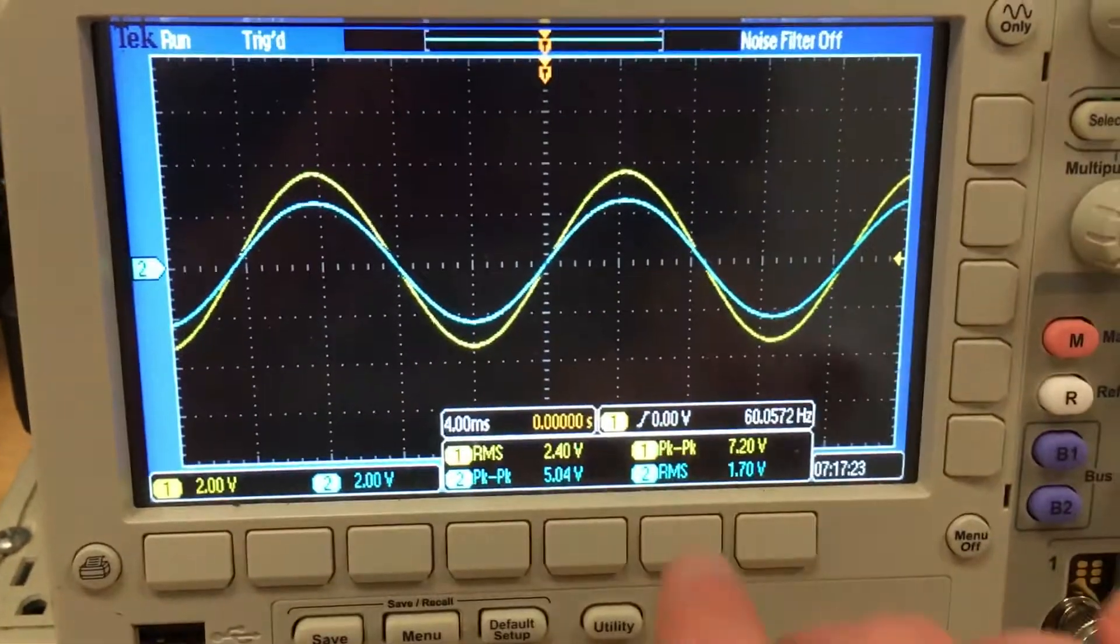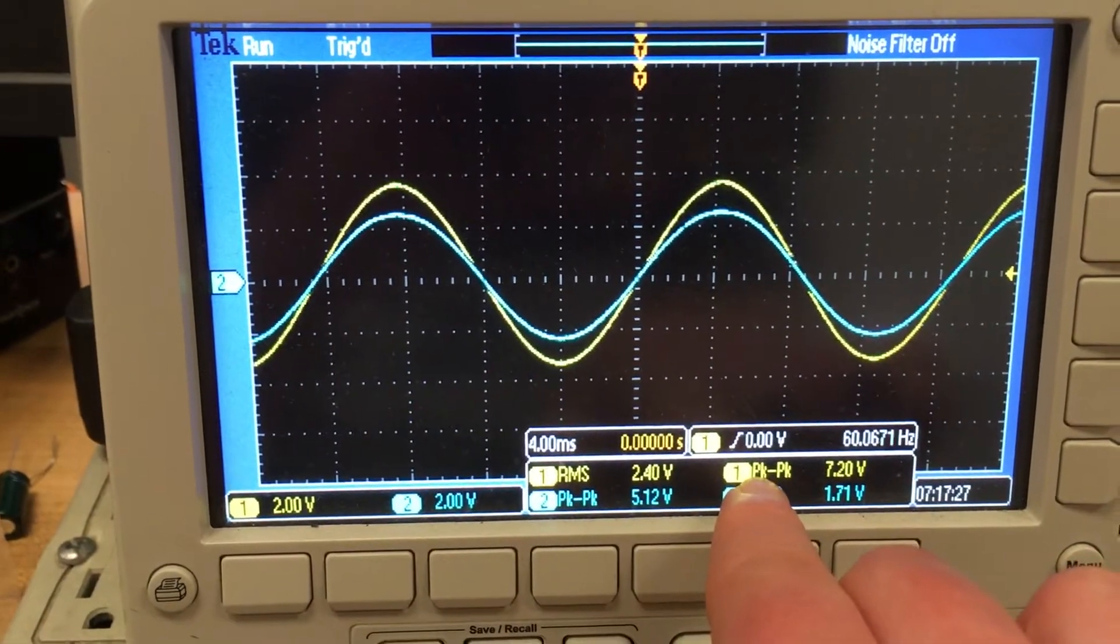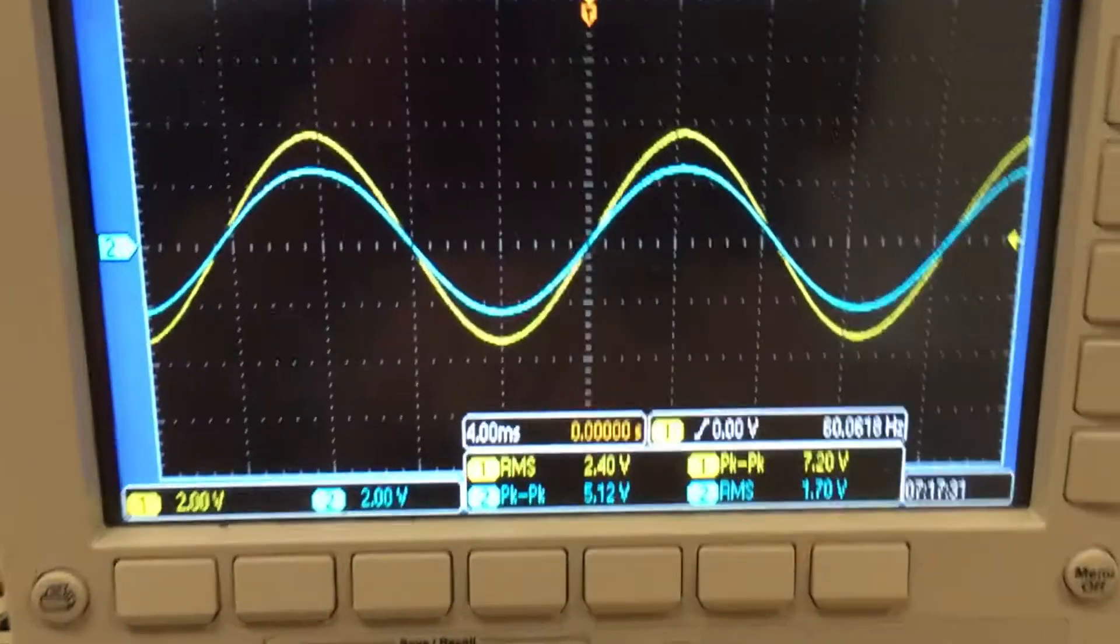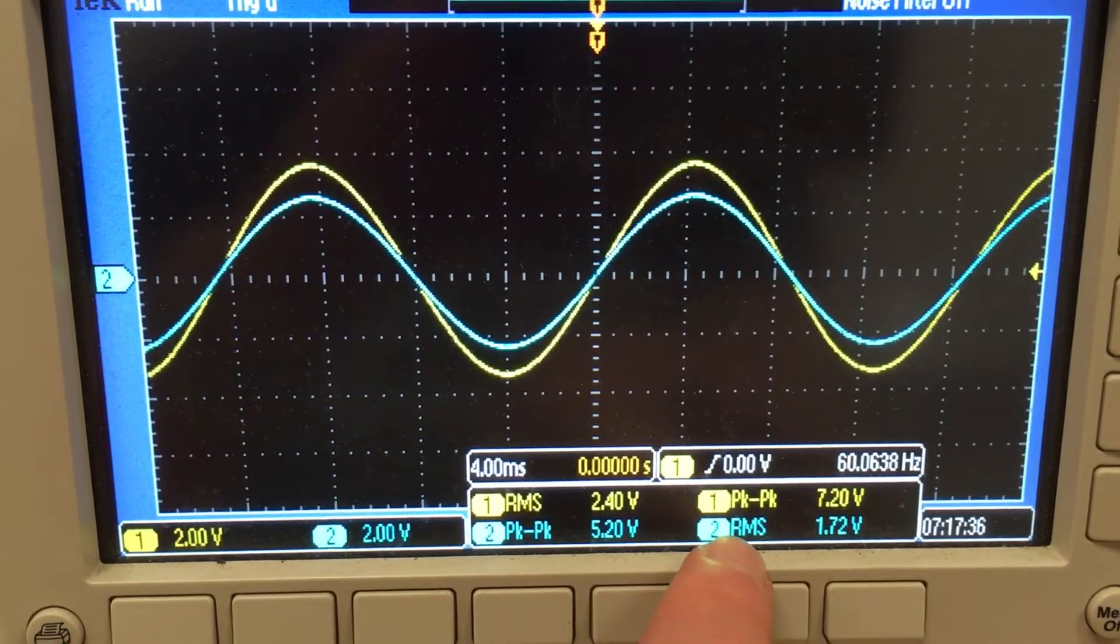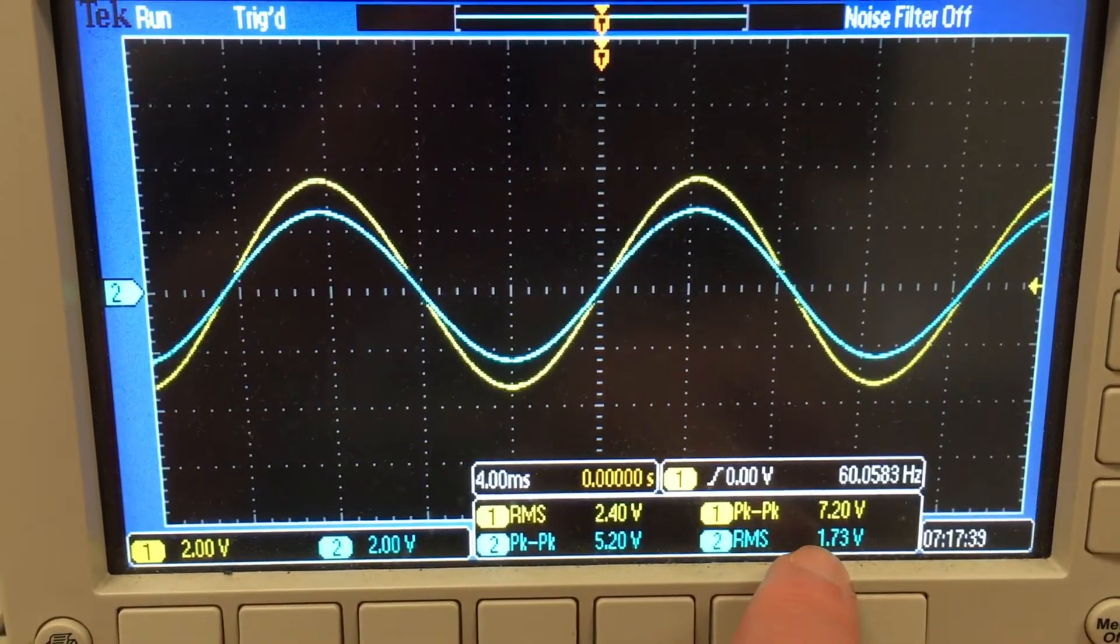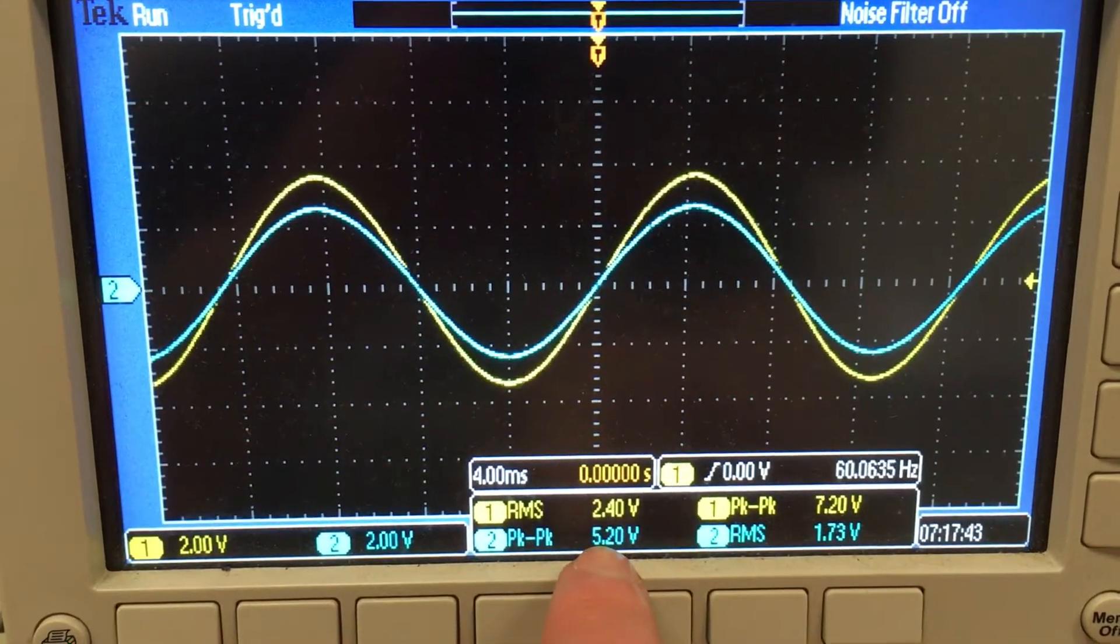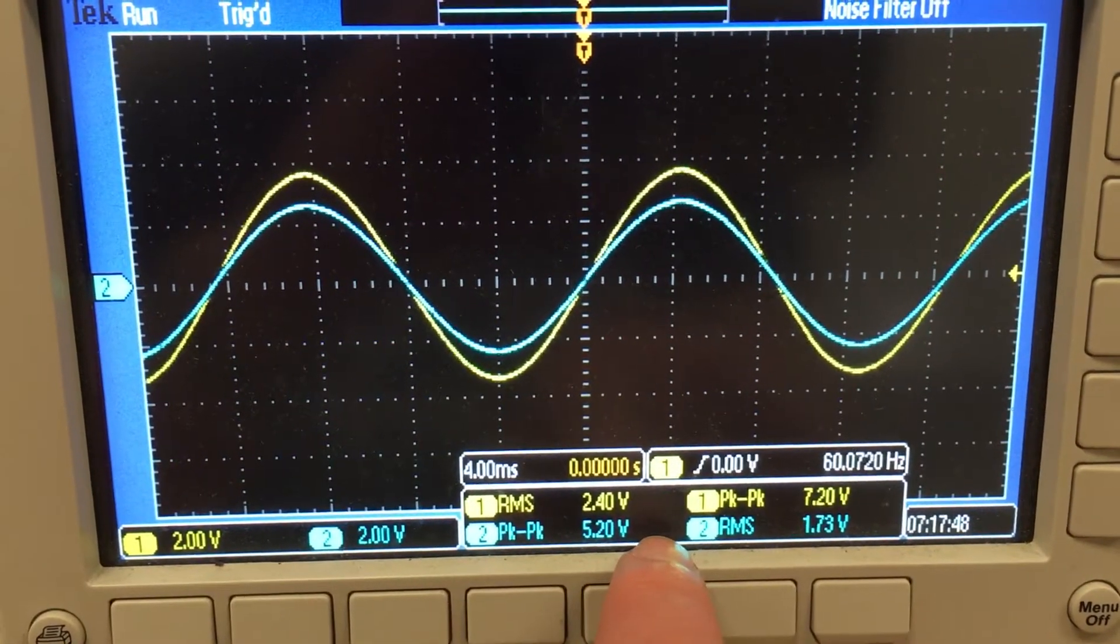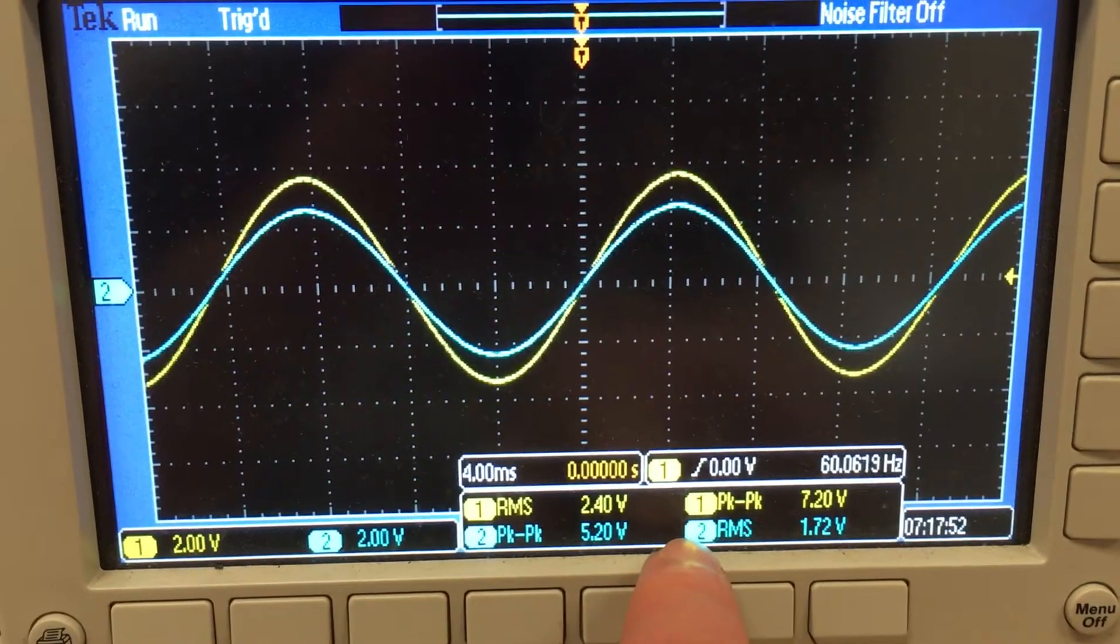Now, in terms of the measurements I'm making here, in addition to having the RMS and peak-to-peak values for the yellow trace across the whole circuit, we've got the peak-to-peak and RMS values across just the one kiloohm resistor, and that gives us 1.73 volts, which is about 80% of 2.4, and it gives us 5.2-ish volts for the peak-to-peak, and that's again about 80% of that value.